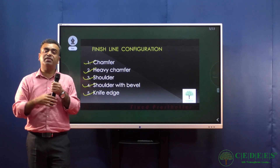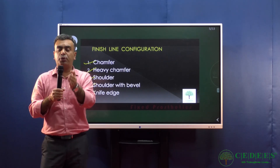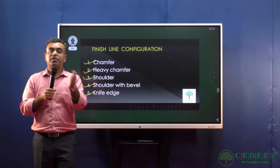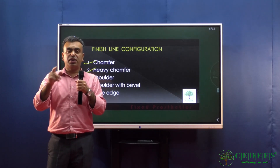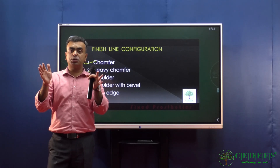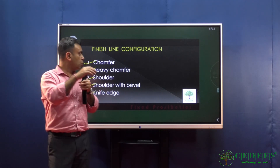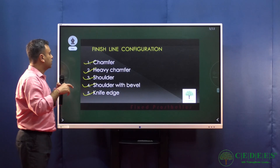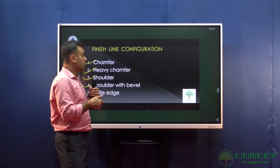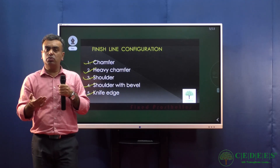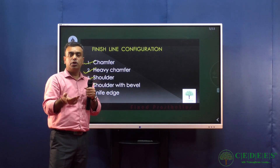For porcelain fused to metal (PFM), which has a metal section with porcelain attached, you need around 1 to 1.2 millimeters of space, requiring either a heavy chamfer or a shoulder so the crown is not over-extended. For all-ceramic crowns, again either a heavy chamfer or a shoulder is used depending on the doctor's clinical judgment.